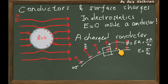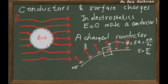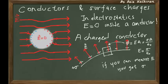As long as you know the surface charge density of a metal, you can calculate the electric field strength right on the surface. This is another nice way of using Gauss's law to calculate electric fields. Inside, the electric field is always zero.